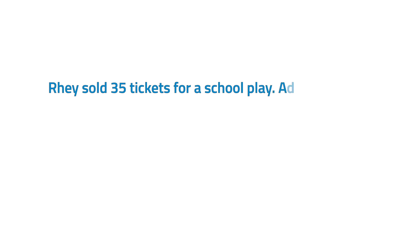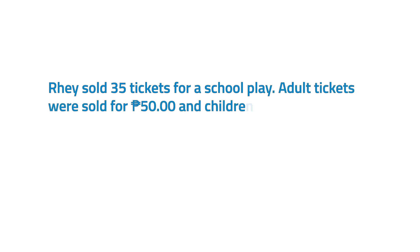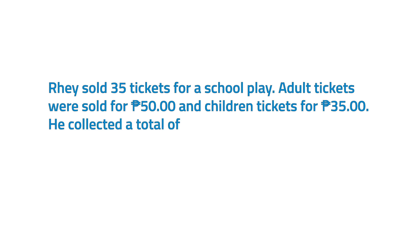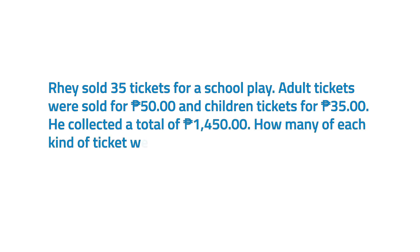Let's take a look at this problem. Ray sold 35 tickets for a school play. Adult tickets were sold for 50 pesos and children's tickets for 35 pesos. He collected a total of 1,450 pesos. How many of each kind of ticket were sold?